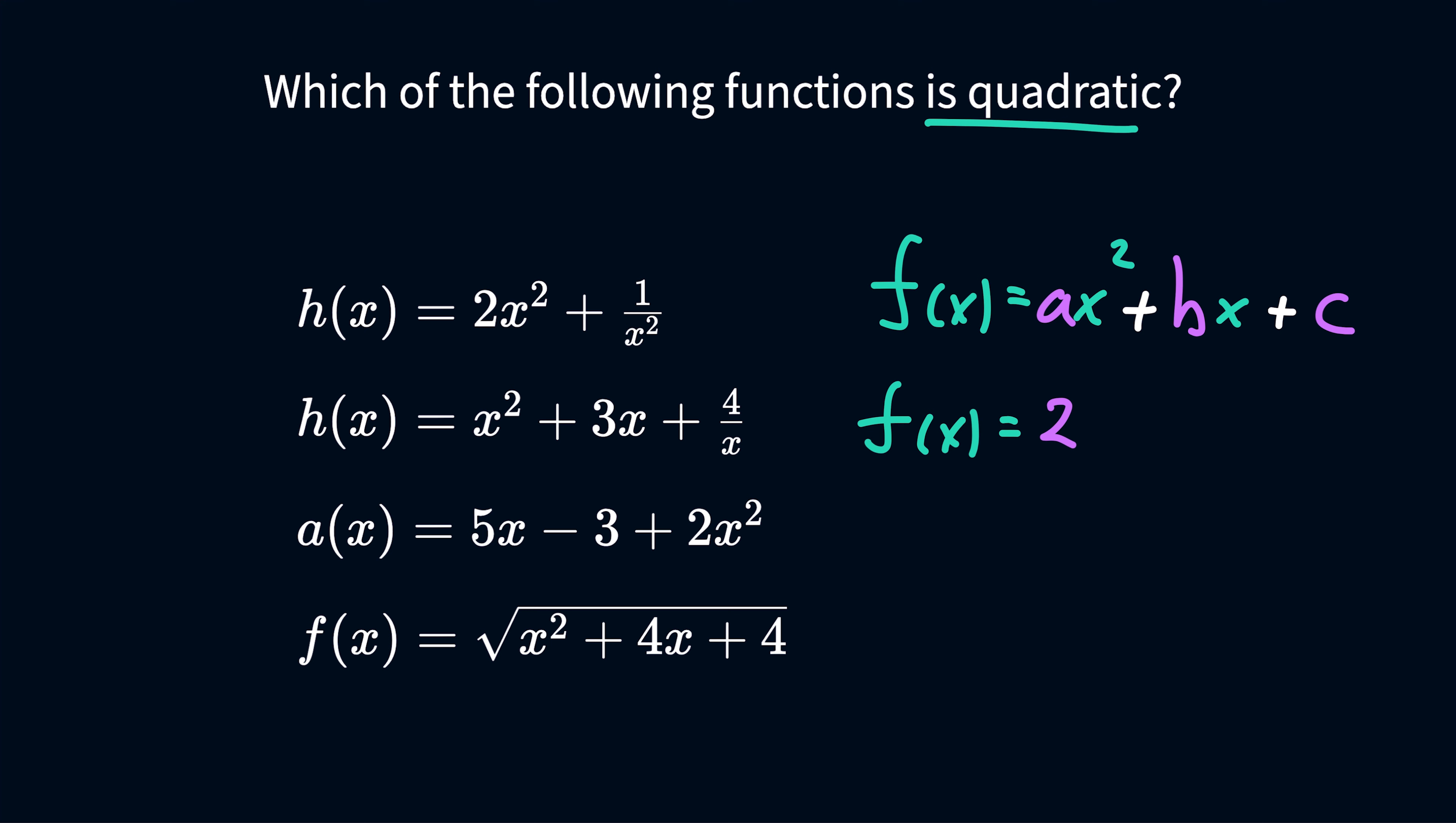It would be 2 times x squared, plus, technically, then we would have 5x, oh boy, it's getting late, ladies and gentlemen. Plus 5 times x. And then we would have plus, now a negative 3. So what I can do is I can just put that kind of in parentheses, plus a negative 3.